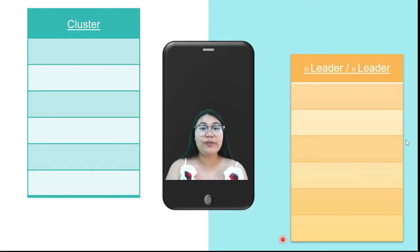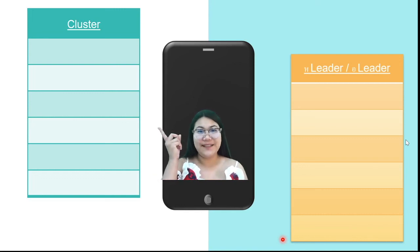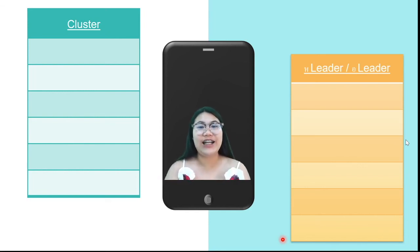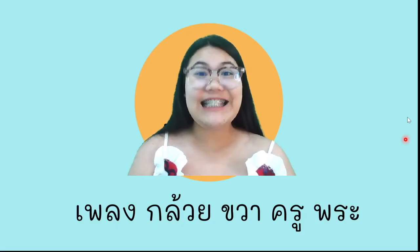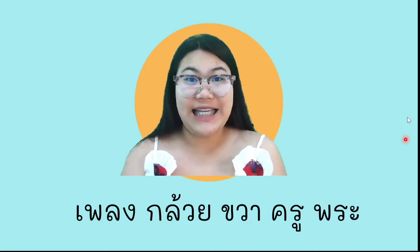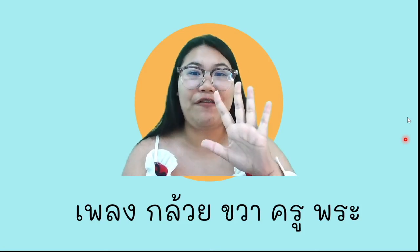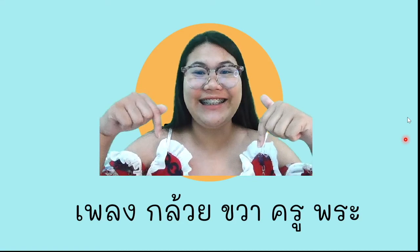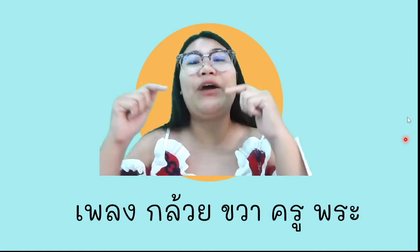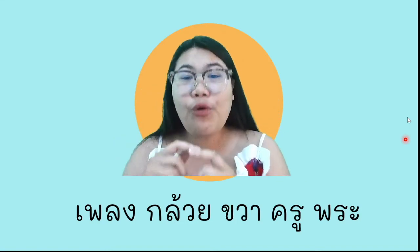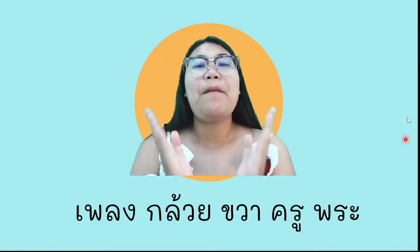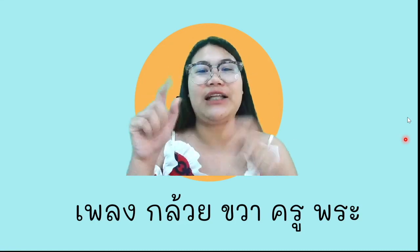This is your homework. According to the passage, I would like you to identify the words that include consonant clusters, ห่ออิ, and อัง. And then I would like you to make a sentence with five words: พริง, กล้วย, ขวา, ครู, and พระ — make a sentence from these five words.